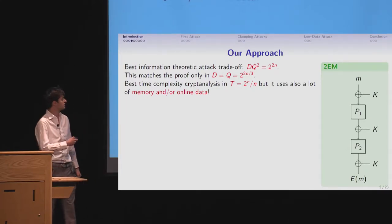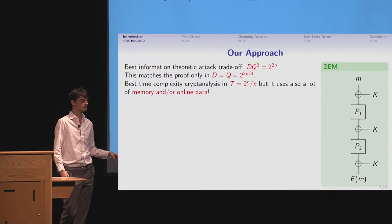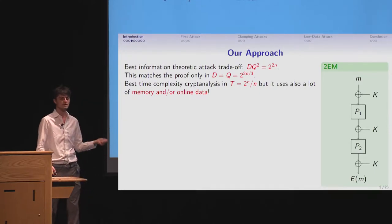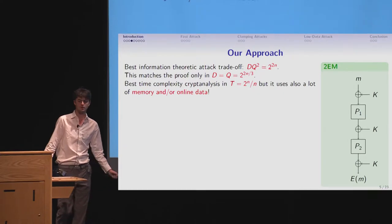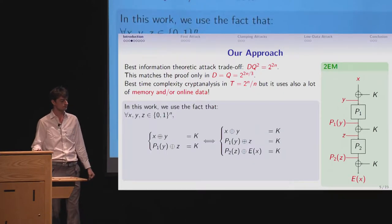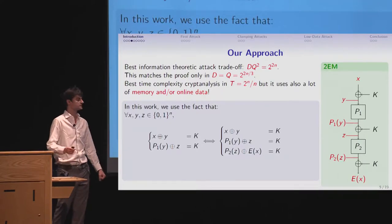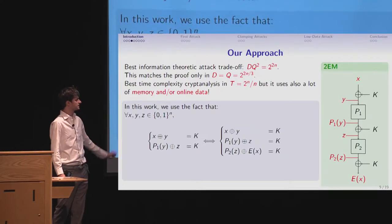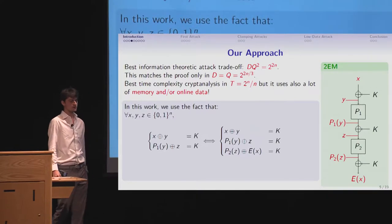which is arguably even hard to get than processing power. And in this talk, with our new approach, we won't do better in terms of time. We're stuck at this 2 to the n by n, but we'll mainly focus on memory and online data to reduce this to a more acceptable level. So what's our approach? Well, we do some kind of the same reasoning as before.